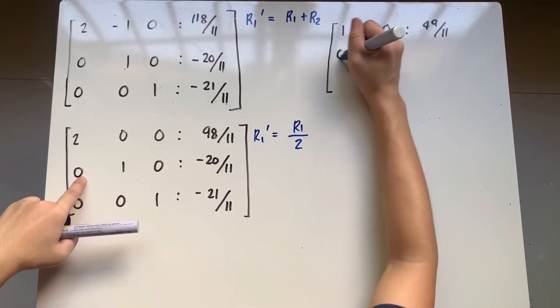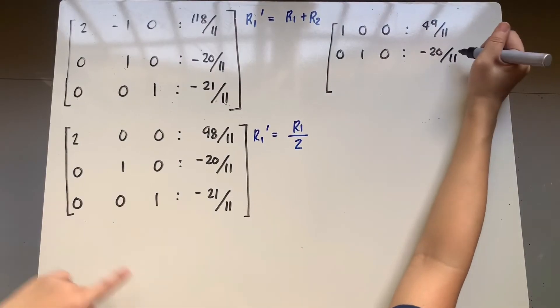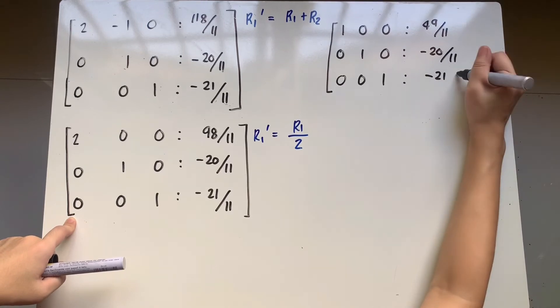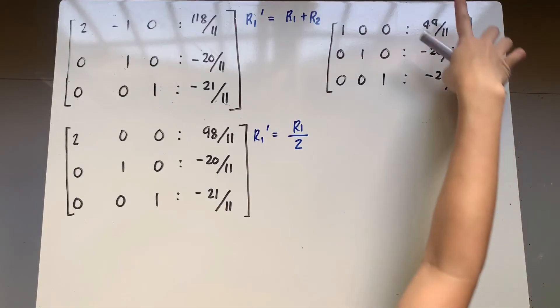And then, copy the remaining rows. We have 0, 1, 0, it's negative 20 over 11. And 0, 0, 1, that's negative 21 over 11. And as you can notice, these are our answers, di ba, in the previous 3 methods we've used.